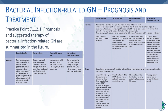Regarding follow-up and course: in post-infectious GN, especially in children, the outcome is good. There may be persistent albuminuria and persistent hematuria even when the patient is in remission. However, persistence of low C3 beyond 12 weeks is an indication for kidney biopsy, because this patient may be diagnosed as C3GN — as mentioned in the membranoproliferative glomerulonephritis lecture. If C3 is still low after 12 weeks, the patient may also have systemic lupus.